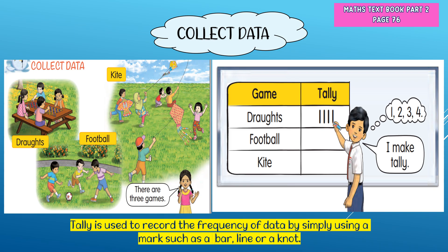Look at the draughts — there are four children playing with draughts, so we tally: one, two, three, four. For football, make a tally: one, two, three, four, five, and six.